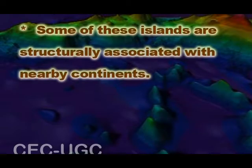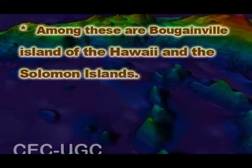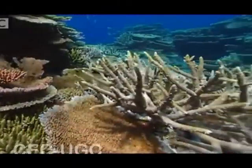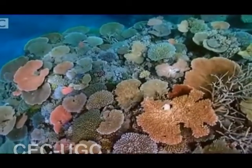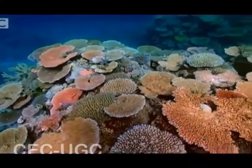The continental islands lie outside the Andesite line and include New Guinea, the islands of New Zealand, and the Philippines. Some of these islands are structurally associated with the nearby continents. High islands are volcanic in origin and many contain active volcanoes, including the Bougainville Island of Hawaii and the Solomon Islands. Coral reefs are low-lying underwater structures built up on basaltic lava flows, one of the most dramatic being the Great Barrier Reef off the northeastern coast of Australia.